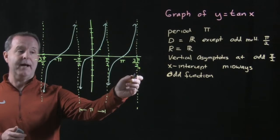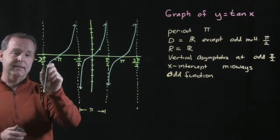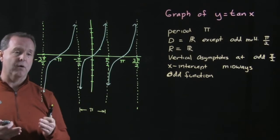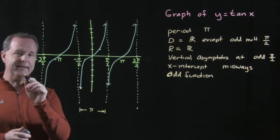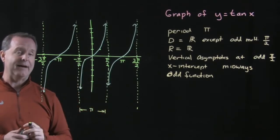So pi halves, 3pi halves, 5pi halves, negative pi halves, negative 3 halves pi, and so forth. So the domain is defined at every position of x except for odd multiples of pi halves.